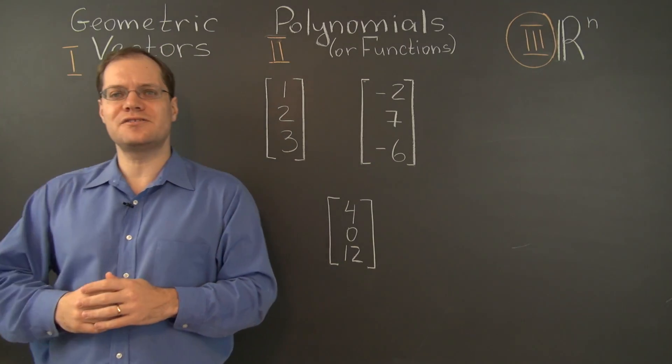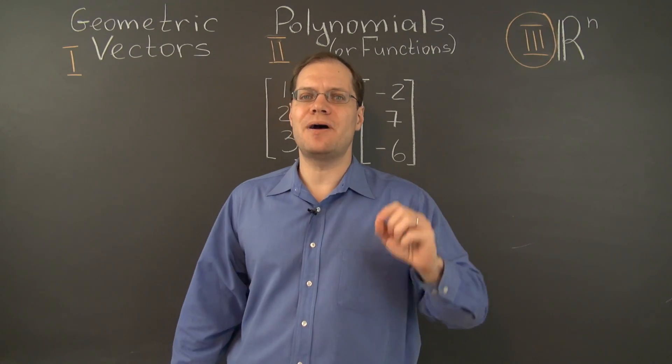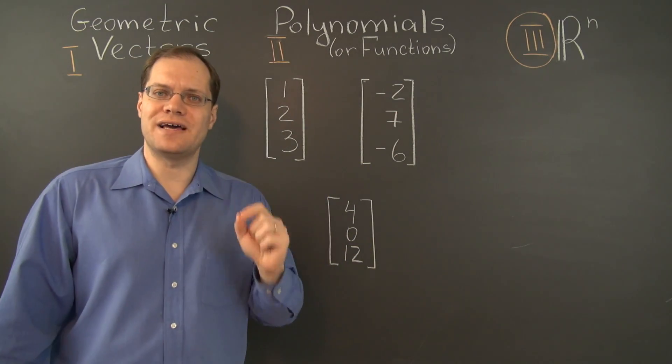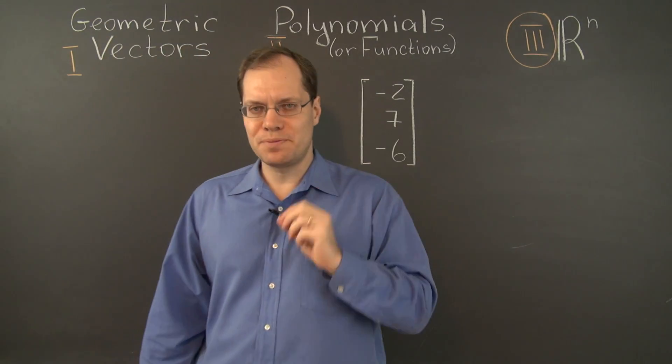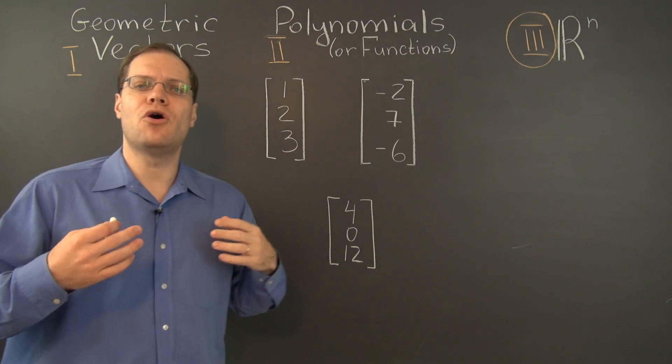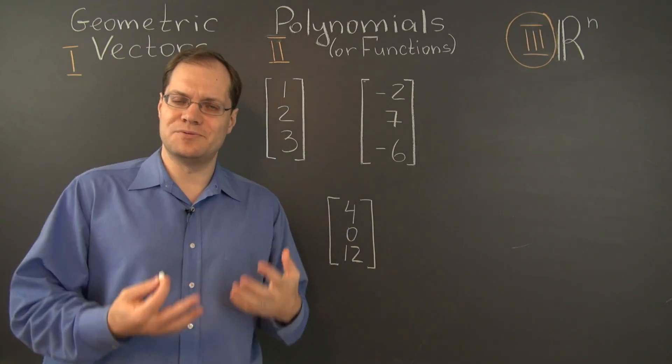Having discussed geometric vectors and polynomials, it is now time to talk about R^n, sets of n numbers. In this video, our examples will come from R^3, triplets of numbers, and one can only marvel at how different these three kinds of objects are.